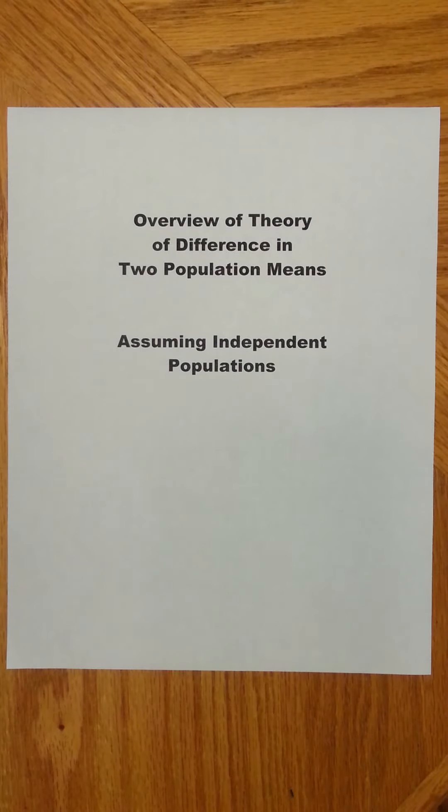Hello. In this video we're going to discuss the overview of the theory of the difference in two population means. Here we are assuming the populations are independent. Essentially, I want to make the comment that the thought structure is very similar to everything we've learned before, just some of the details. We're combining some things and showing you some things that are a little different, but the basic thought process is the same.